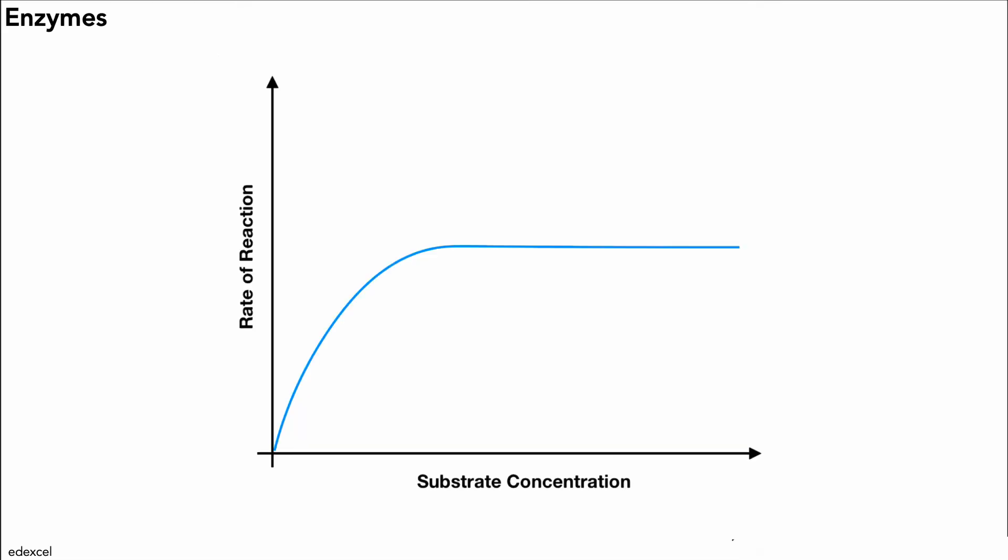Now the final thing we're going to look at is the effect of substrate concentration on the rate of action of enzymes. As you can see, as we increase the substrate concentration, the rate of reaction increases until we reach a maximum, after which it levels off. Now we need to be able to explain why this happens. So let's take a look at what happens when we have a low concentration of substrate.